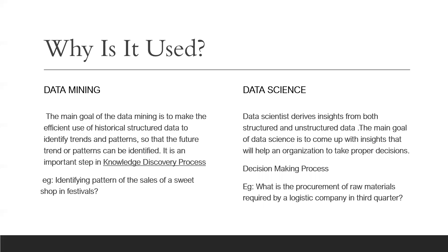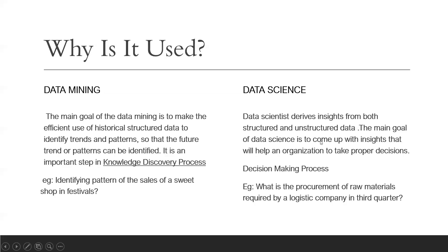The final goal of data science is to support decision-making — it is a decision-making process altogether. A good example use case is: what is the procurement of raw materials required by a logistics company in the third quarter? Suppose you work at a company that sells Lipton tea, and you need enough tea crops for production. Your logistics team must procure sufficient raw materials so the production process continues. Based on insights derived from both structured and unstructured data, you make that decision. Data mining will definitely be used within this process.